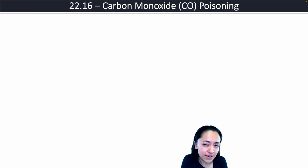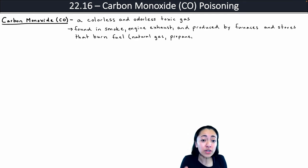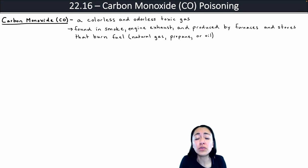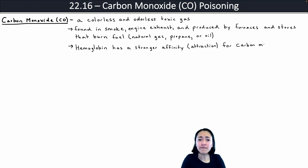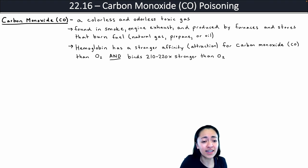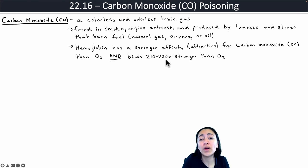Now let's talk about carbon monoxide poisoning. Carbon monoxide is a colorless and odorless toxic gas found in smoke, engine exhaust, and produced by furnaces and stoves that burn fuel such as natural gas, propane, or oil — electric stoves will not give off carbon monoxide. One important fact is that hemoglobin has a stronger affinity for carbon monoxide than for oxygen, and it binds 210 to 220 times more strongly to hemoglobin than oxygen does.